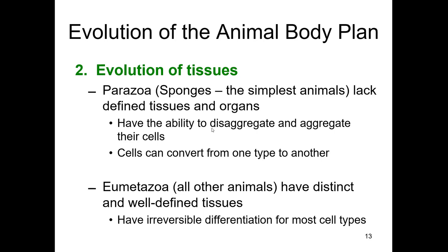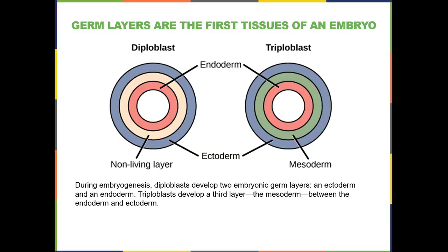The Eumetazoa, on the other hand, for the most part have cells that become irreversibly differentiated — once a cell becomes a certain type, it stays that type. The Eumetazoans all have true tissues because the embryos go through gastrulation. The embryo goes into gastrulation, and those are the first two tissues of any embryo in the animal kingdom — always the ectoderm and the endoderm.